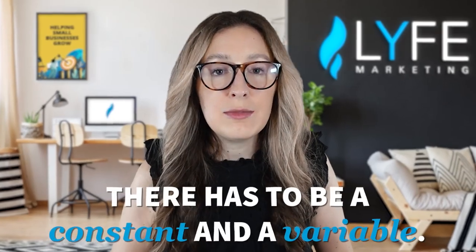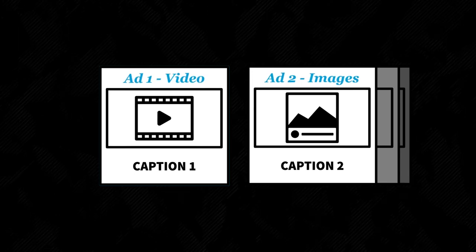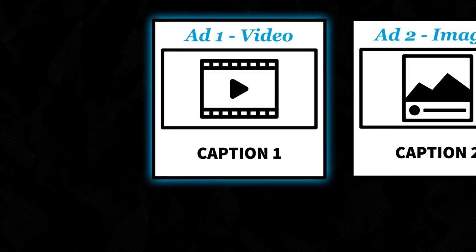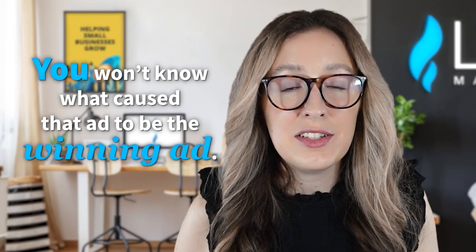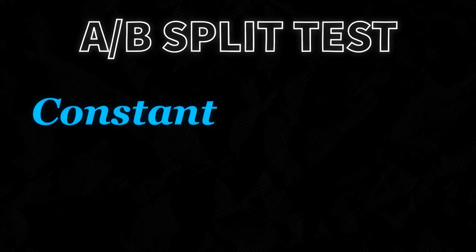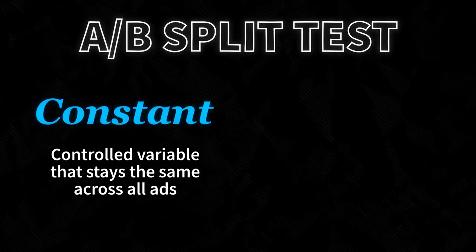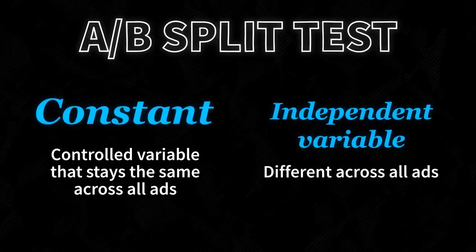I've also seen clients put up multiple ads and think that alone is A-B split testing, but there has to be a constant and a variable. Let's say you've got ad number one with a video and a caption about that video, and ad number two with product carousel images and a different caption about those products. If the video ad wins, you won't know what caused that. It might be the video creative versus the carousel — but the captions were different too. So what if it was the caption that made it perform better? You won't know, because you didn't run a true A-B split test with a controlled variable that stays the same across all ads versus an independent variable that's different across all ads.